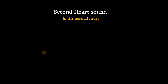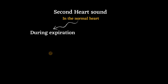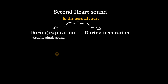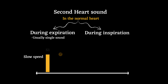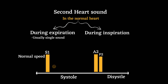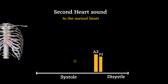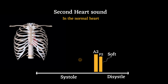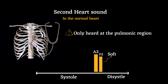In the normal heart, during expiration, the second sound S2 is usually single, but during inspiration it is made of two component sounds: aortic valve closure A2, which happens first, and pulmonic valve closure P2, which happens second. Normally, P2 is soft and only heard in the pulmonic region at the left second intercostal space.